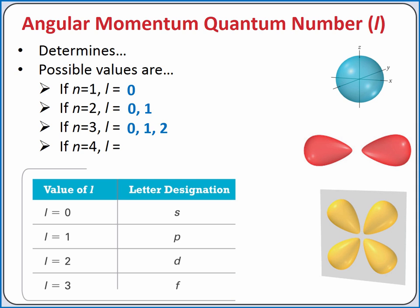And if n equals 4, the possible values are 0, 1, 2, or 3. There are also letter designations for each value of L. L equals 0 is also called S, and it corresponds to the shape of the sphere, shown in blue. L equals 1 is P, and corresponds to the red, dual teardrop shape. L equals 2 is D, and L equals 3 is F.